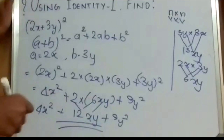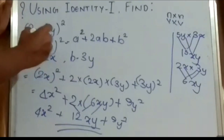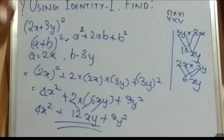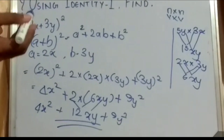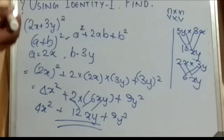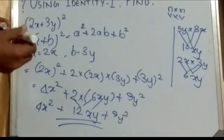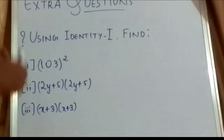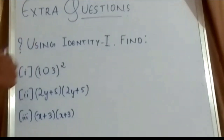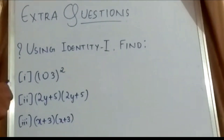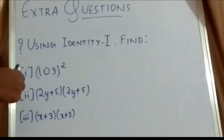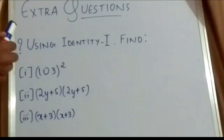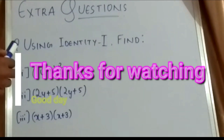One more point: in identity 1, (A + B)², we can use any variables such as (x + y)², or pq, or cd — the formula remains the same. I am giving you some extra questions; I request everyone to note and solve them. The answers and steps will be discussed in the next video. Till my next video, bye!